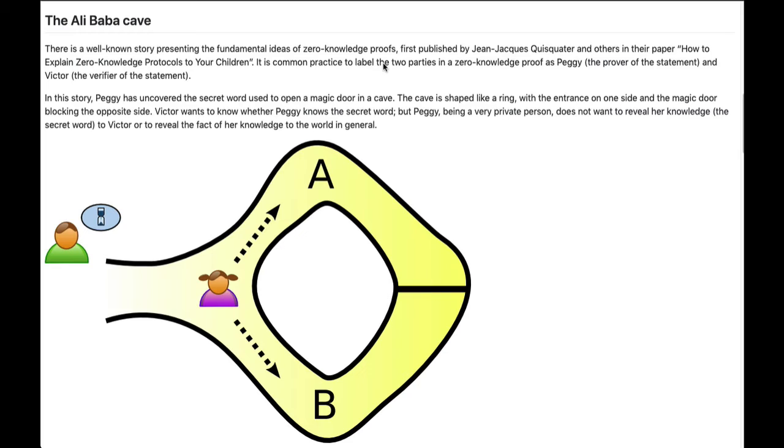That's the little girl in the purple shirt there, where you can walk around either side A or side B, and at the back of the cave there is a magic door that is locked with a password.